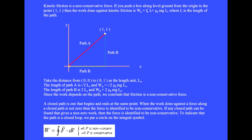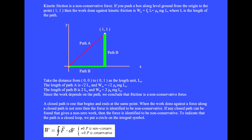Kinetic friction is a non-conservative force. If you push a box along level ground from the origin to the point (1, 1), then the work done against kinetic friction is mu_k m g L, where L is the length of the path. Taking the distance from (0,0) to (0,1) as the unit of length L0, the length of path A is the square root of 2 times L0, and the work along path A is the square root of 2 times mu_k m g L0. Since the work depends on the path, friction is a non-conservative force. A closed path is one that begins and ends at the same point; when the work done along a closed path is not zero, the force is non-conservative.